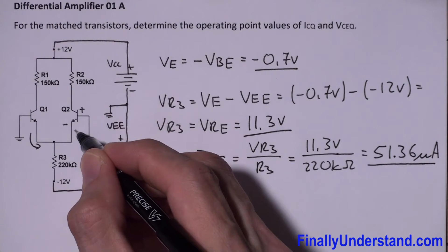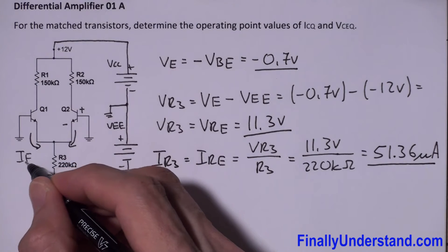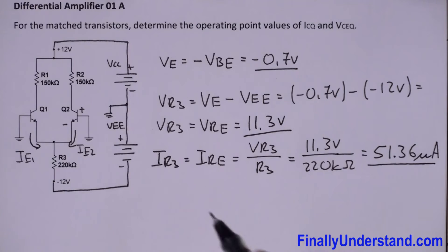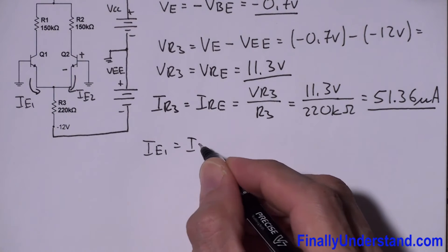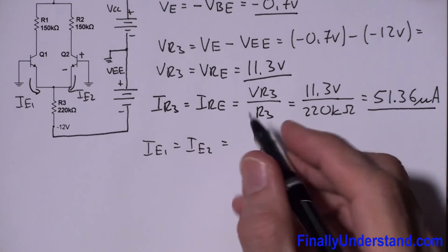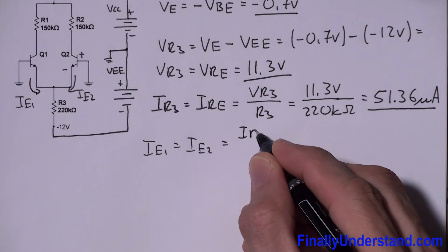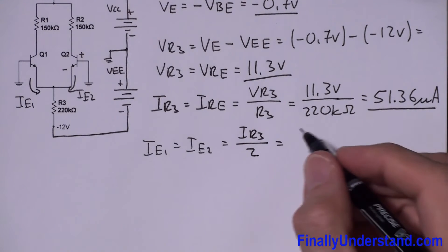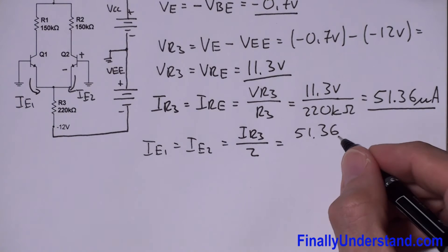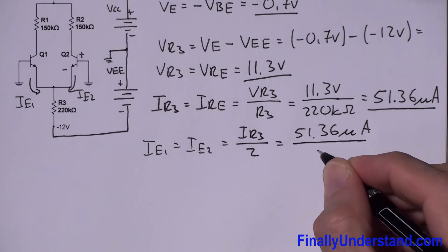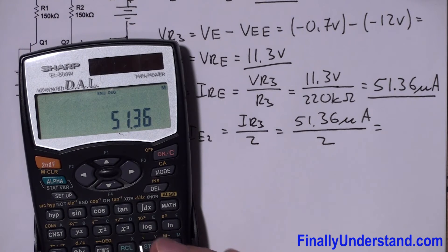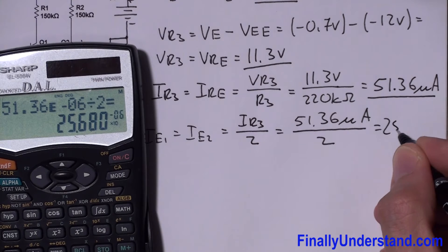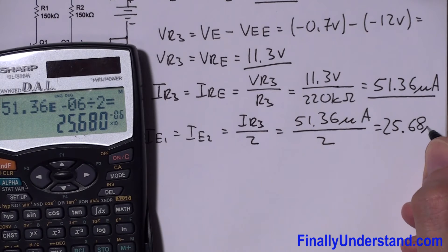Next I need to find the currents going through each emitter. I'll call them IE1 and IE2. Since the circuit is symmetric, IE1 equals IE2, and each is simply half of the tail current. So IE1 = IE2 = IR3 divided by 2 = 51.36 µA divided by 2, which equals 25.68 microamps.